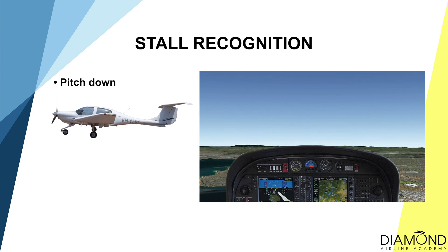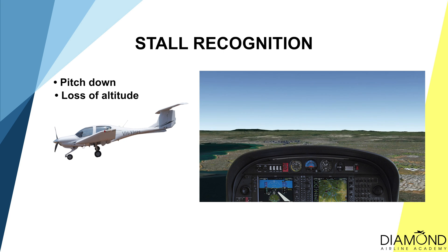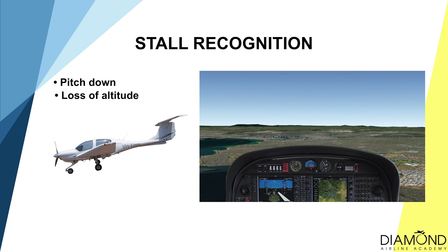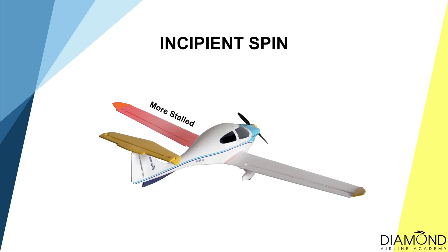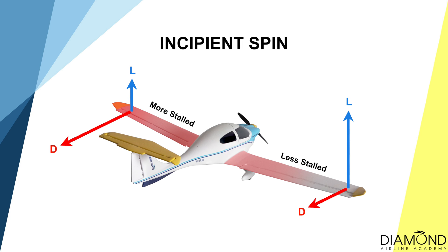As the aircraft stalls, the nose attitude will pitch down involuntarily and lose altitude. If the aircraft is out of balance during a stall, it will be more prone to wing drop. Wing drop occurs when one of the wings stalls before the other wing, causing the entire aircraft to roll towards the stalled wing. If the rolling moment is not corrected right away, it will lead to more yaw and more roll, eventually leading to a fully developed spin.